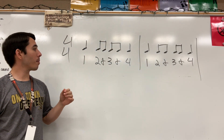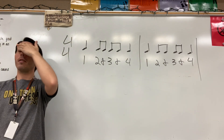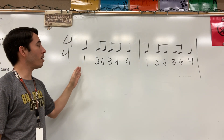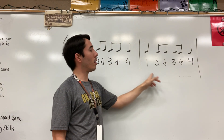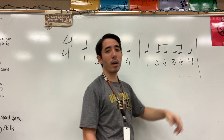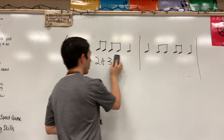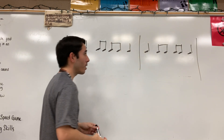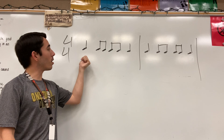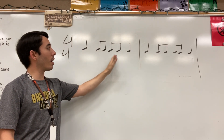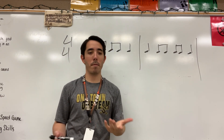Here we go: one, two-and, three-and, four; one, two-and, three-and, four; one, two-and, three-and, four. Let's do that again — this time I want you to count without reading my numbers, just by reading the notes. Ready, down-up, down-up, set, go: one, two-and, three-and, four; one, two-and, three-and, four; one, two-and, three-and, four. Awesome, pretty easy!